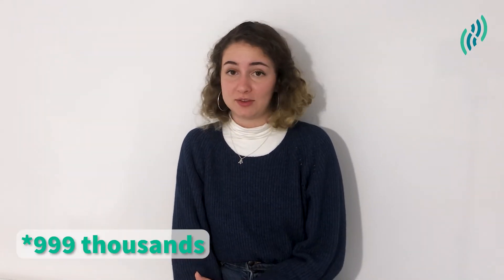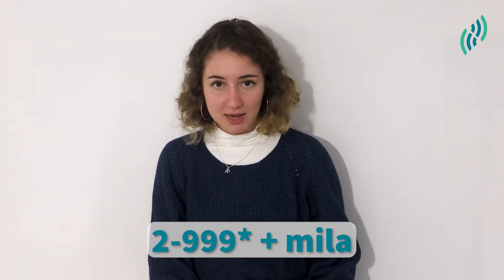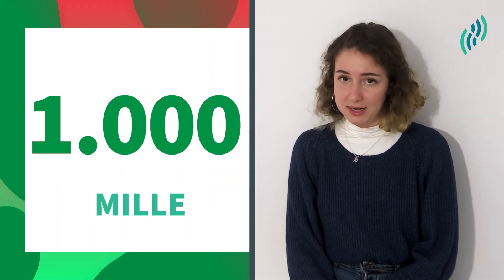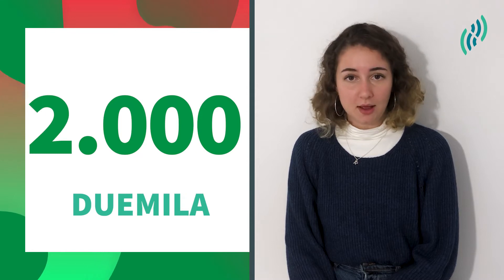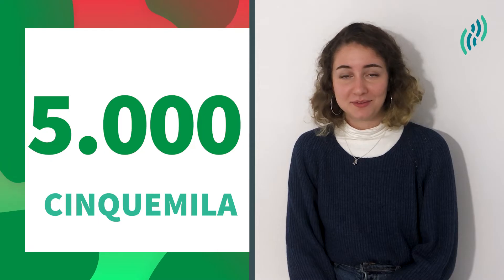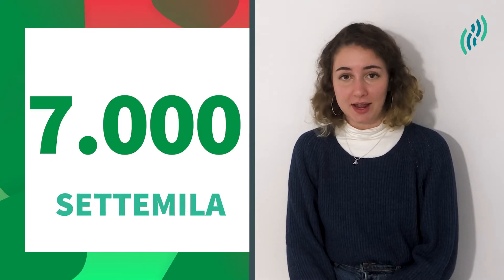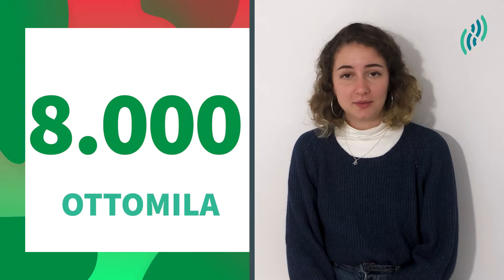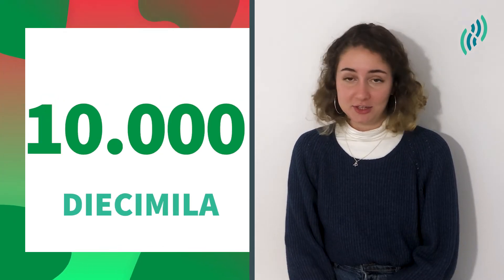And after 999, it's time for the thousands. To say a thousand in Italian, you say mille. Now for all the thousands from two thousand up to 99,000, add the numbers from two to 99 in front of mila. So let's go over one thousand to ten thousand: mille, duemila, tremila, quattromila, cinquemila, seimila, settemila, ottomila, novemila, diecimila.